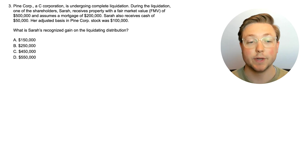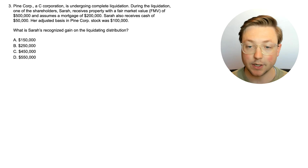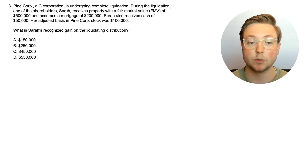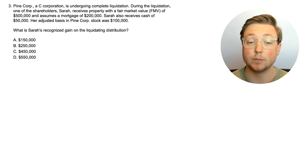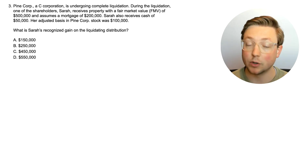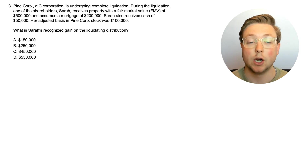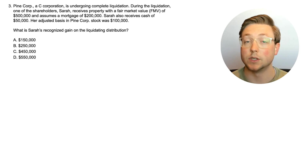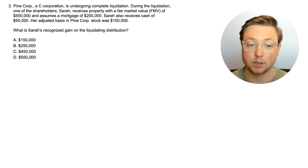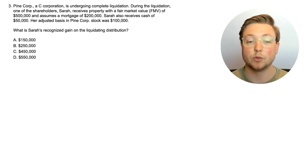Here we are at question three. Pine Corp, a C corporation, is undergoing complete liquidation. During the liquidation, one of the shareholders, Sarah, receives property with a fair market value of $500,000 and assumes a mortgage of $200,000. Sarah also receives cash of $50,000. Her adjusted basis in Pine Corp stock was $100,000. What is Sarah's recognized gain on the liquidating distribution?